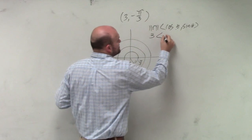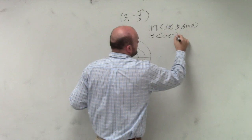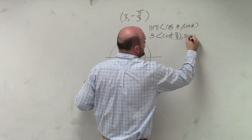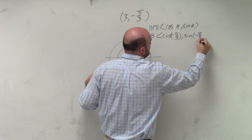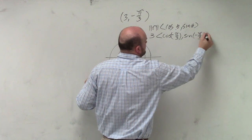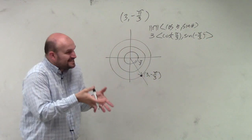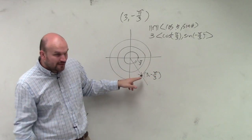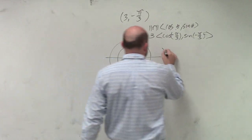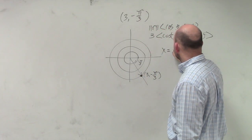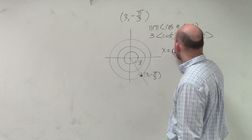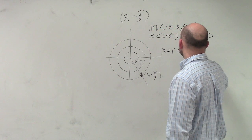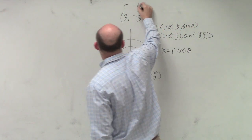So it'd be 3 times the cosine of negative π/3 times the sine of negative π/3. Right? And that's going to give us our terminal point of our vector. But we're not really talking about vectors. We're just actually talking about what are the x and y coordinates of this. So all we're simply going to do is, for our x, we're going to do r times the cosine of theta. So that's my r, that's my theta.